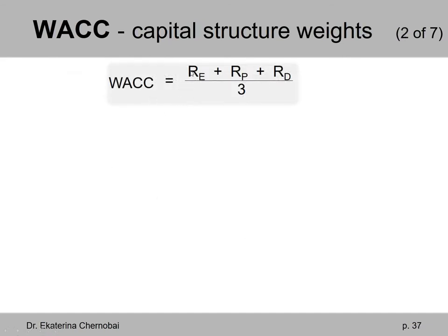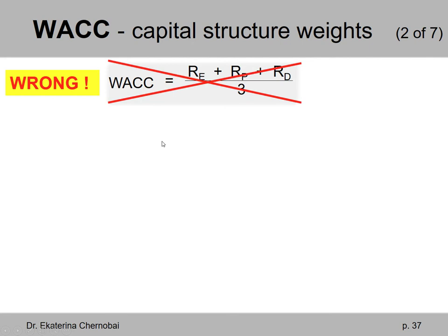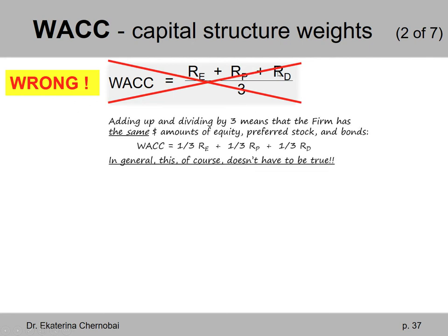Should we just sum up the three costs — RE plus RP plus RD — and divide them by three, which would be the simple average of the three, to give us the weighted average cost of capital? It turns out that's generally a wrong approach, because adding the three and dividing by three is the simple average, which means you're implying that the firm has the same dollar amounts of equity, preferred stock, and bonds in its capital structure.